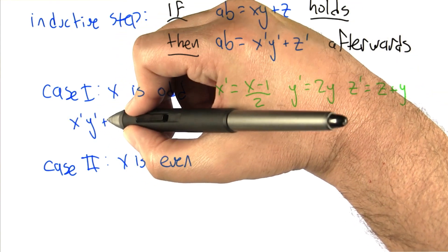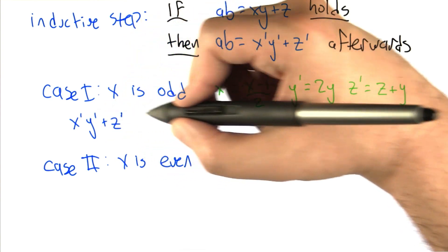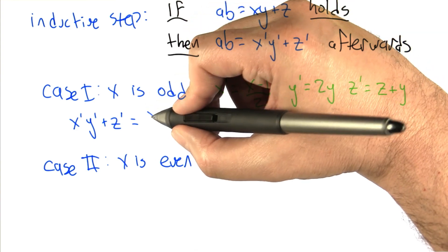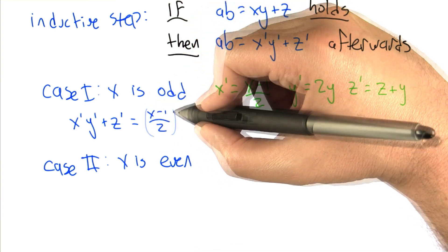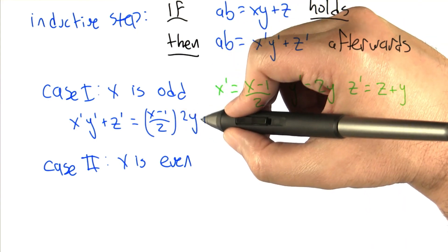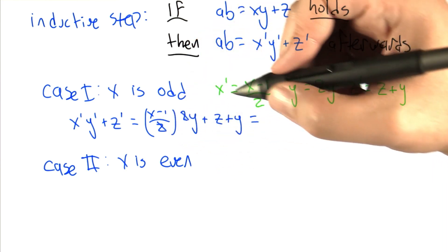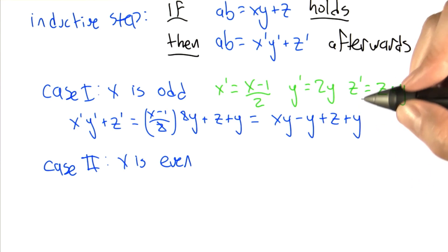So what can we say about x prime times y prime plus z prime at the bottom of the loop? We can substitute in these values. We get x minus 1 over 2 times the new value of y, which is 2y, plus the new value of z, which is z plus y. And we notice that this 2 and that 2 cancel. And we get xy minus y plus z plus y.